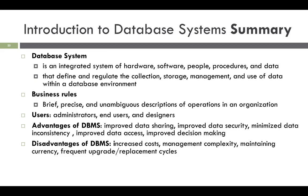To summarize, the database system is an integrated system of hardware, software, people, procedures, and data. It defines and regulates the collection, storage, management, and use of data within the database environment. Business rules are brief, precise, and unambiguous descriptions of operations in an organization. There are three different types of users: administrators, end users, and designers. The advantages of DBMS include improved data sharing, improved data security, minimized data inconsistency, improved data access, and improved decision making.